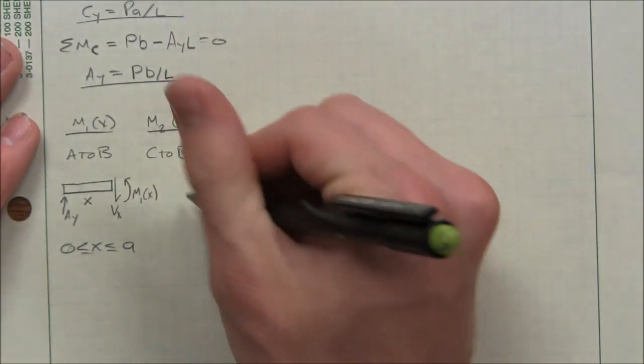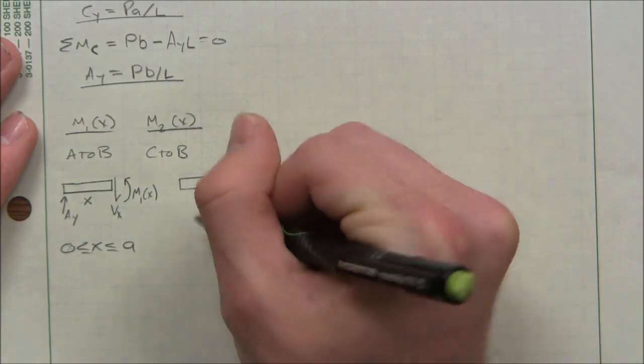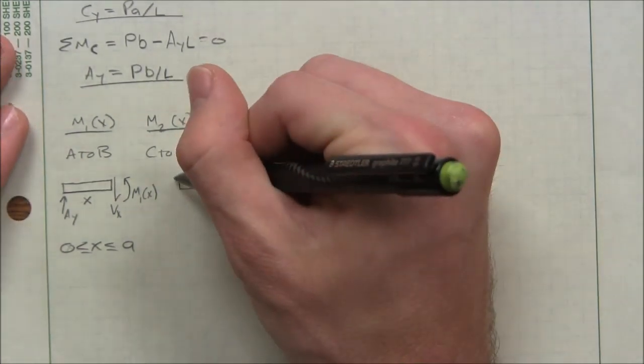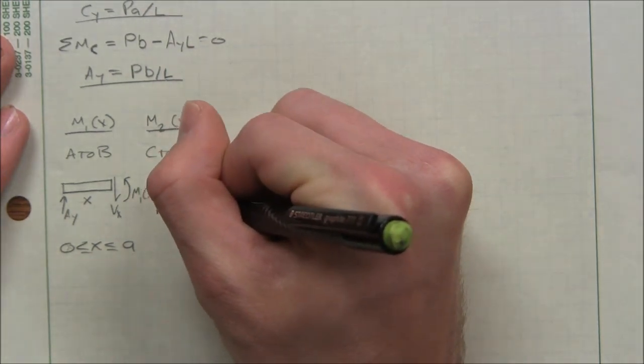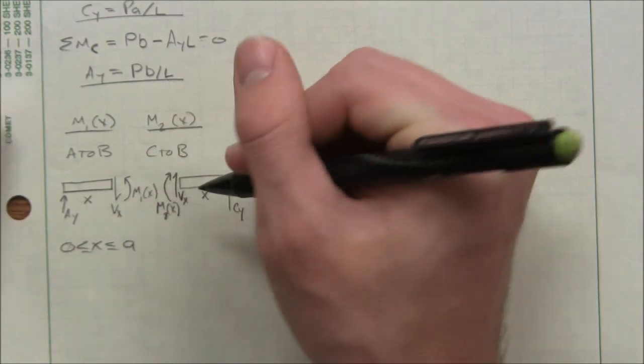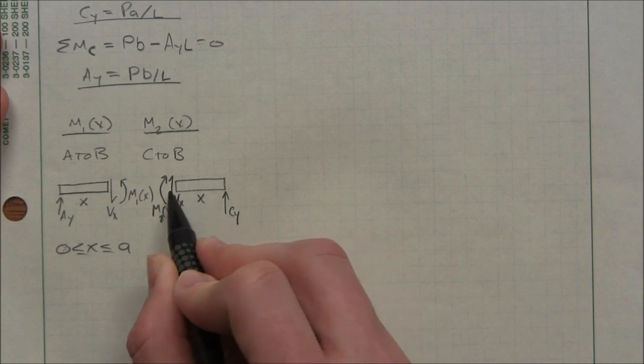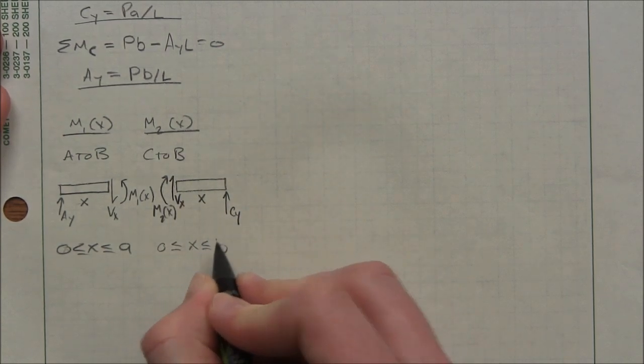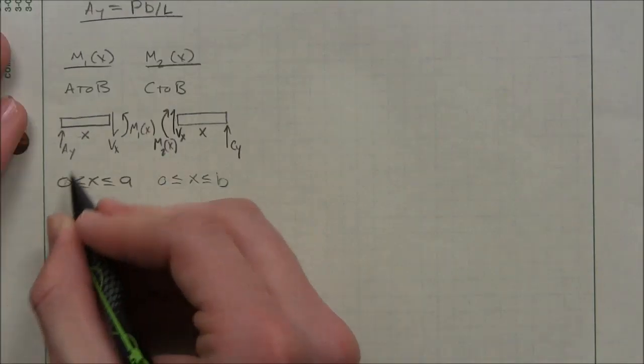I'll do the same thing for M2. This time we're starting at C, and X is the distance away from C. So I have my shear. This is my M2 of X. This is my VX. So this is going to be going from zero to a length of B at its maximum. What this is doing is I'm setting up my future limits of integration once we start integrating.